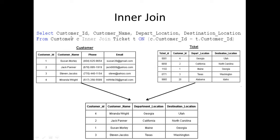You would write SELECT customer ID, customer name, department, depart location, destination location FROM the customer table, and you want to join that customer table with the ticket table. And the only way that these tables are joining is by the common column they share between them, which is customer ID.